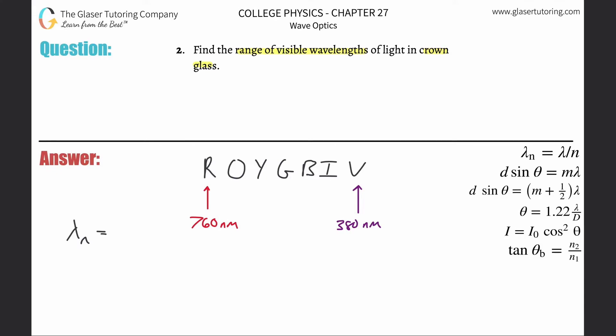The wavelength changes, but the frequency of the wave will stay the same. So this equals the wavelength in a vacuum divided by the index of refraction of that particular crown glass.